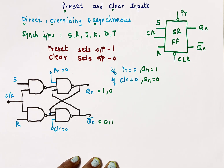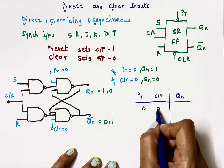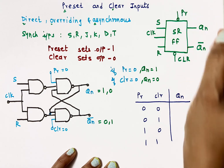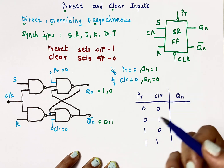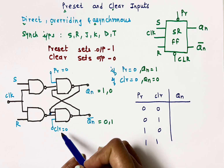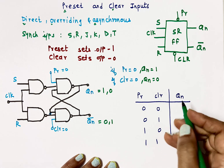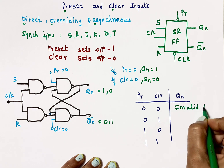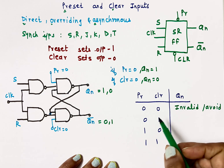Now let's write the truth table for preset and clear. The inputs are preset and clear, and the output is Qn. The conditions are 0-0, 0-1, 1-0, and 1-1, considering active-low preset and clear. When preset is 0 and clear is 0, we are simultaneously trying to set the output to 1 and clear it to 0 — this is an invalid condition that we must avoid.